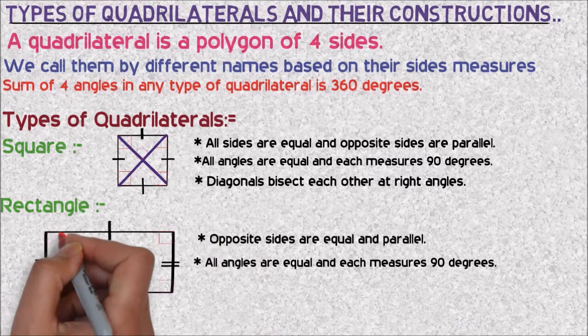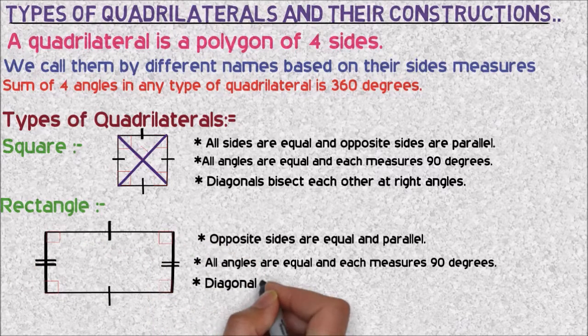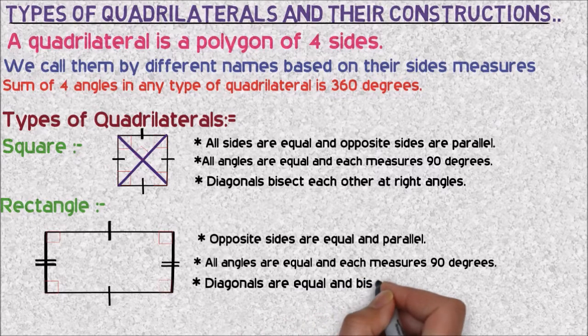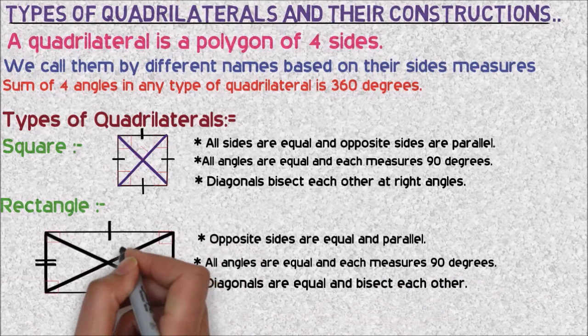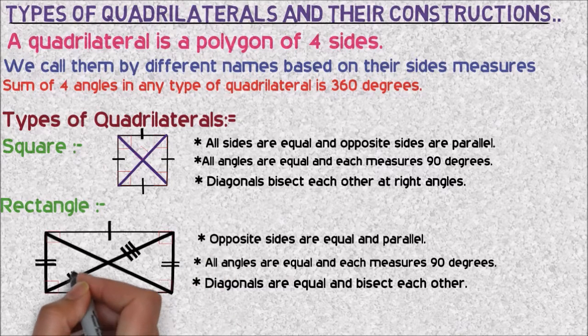And about diagonals, they are equal and also bisect each other. So the triangles formed opposite to each other are equal, that means they are congruent to each other.